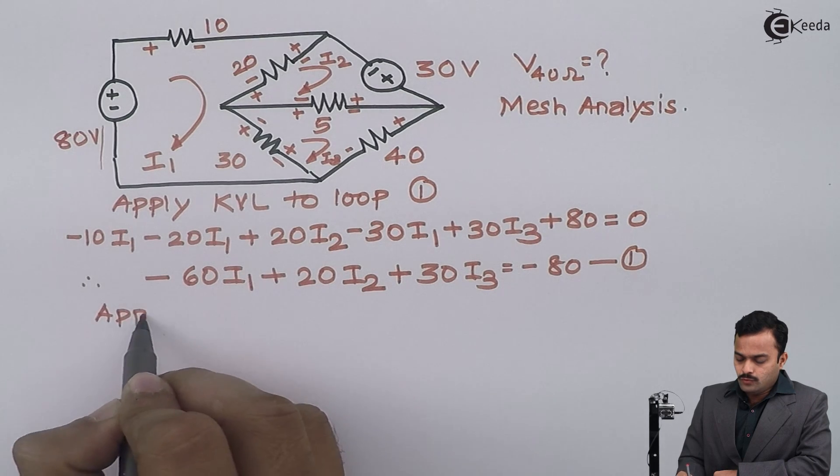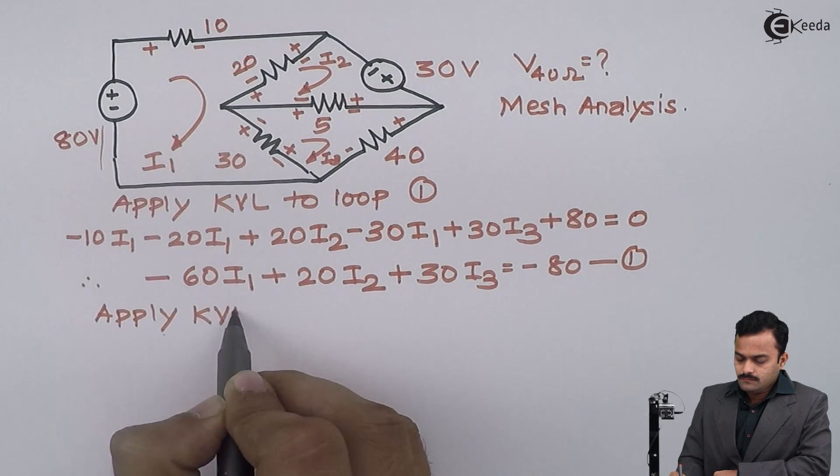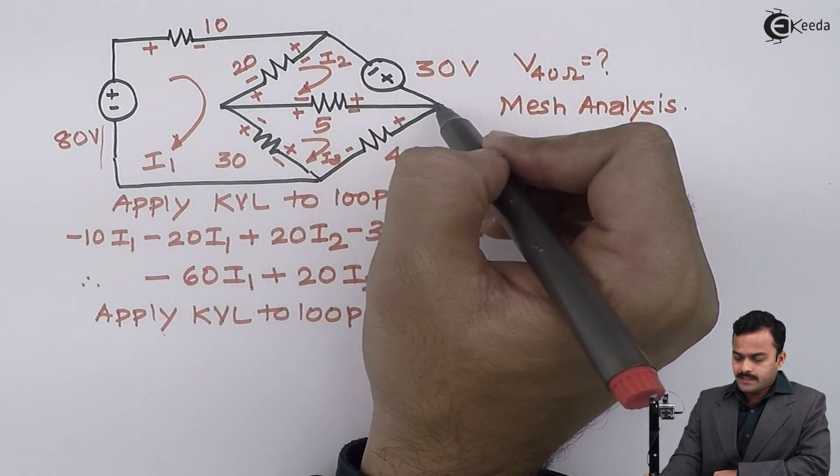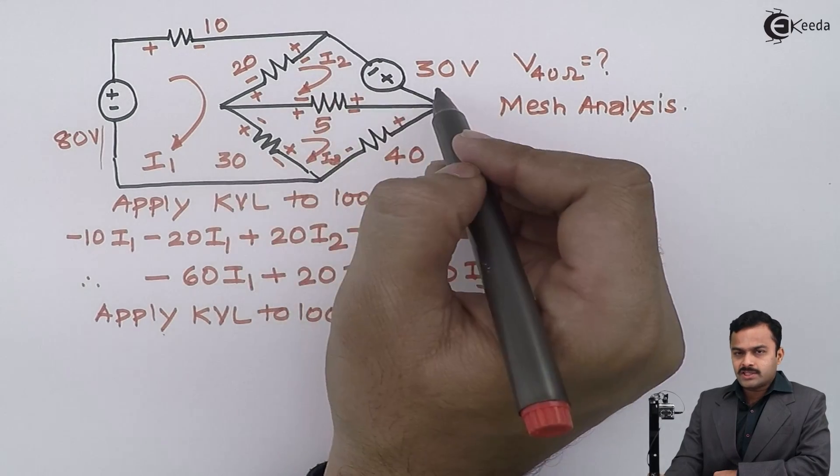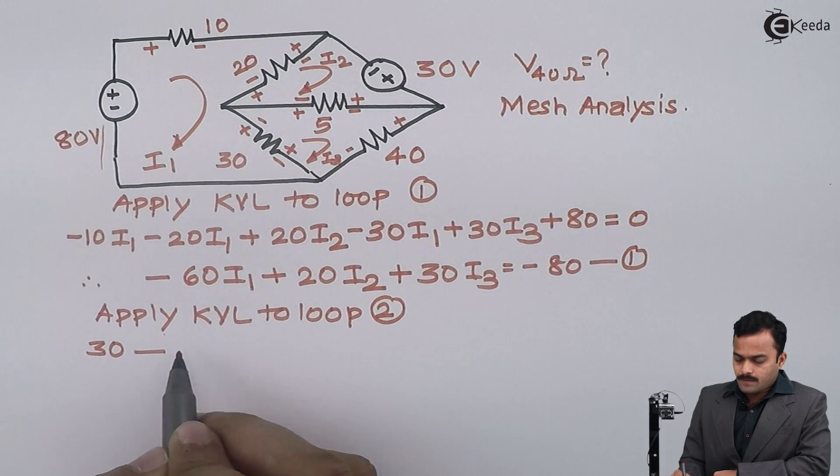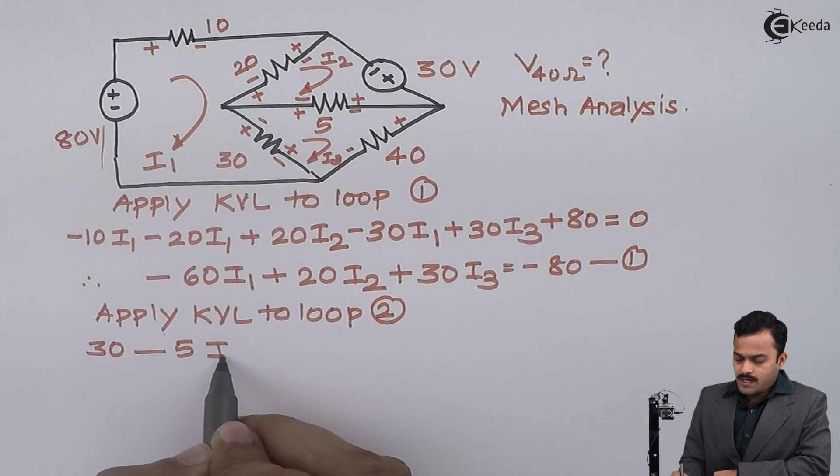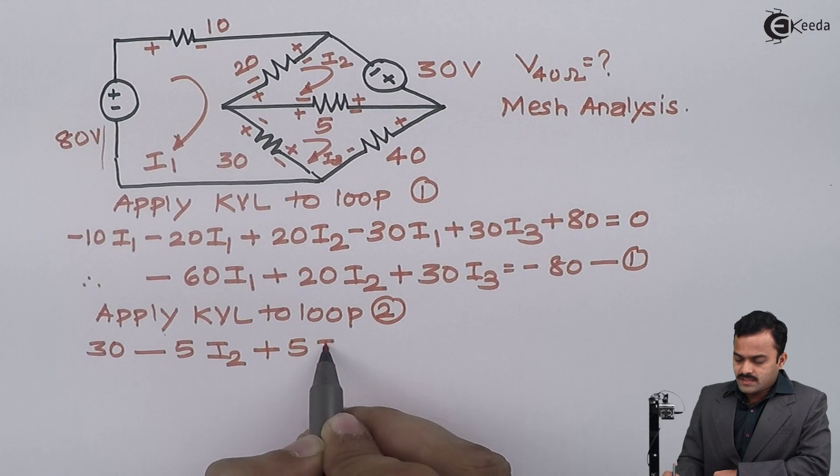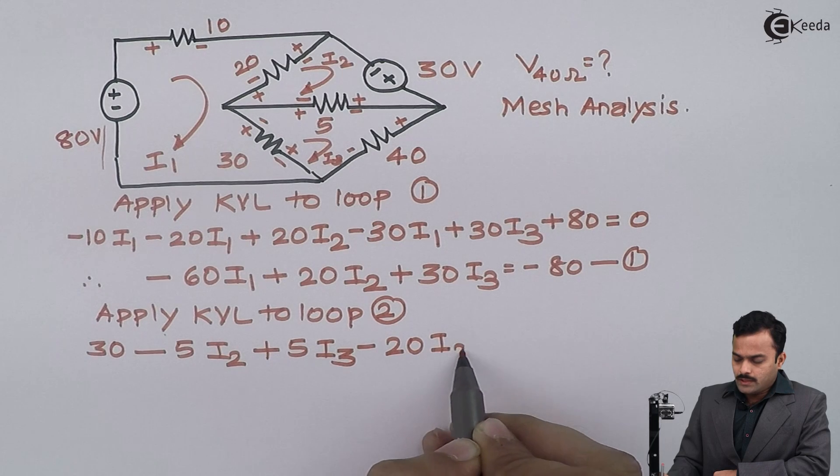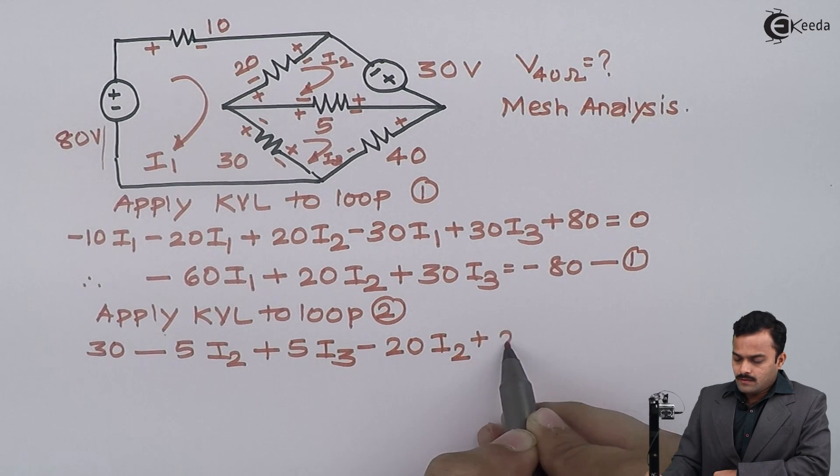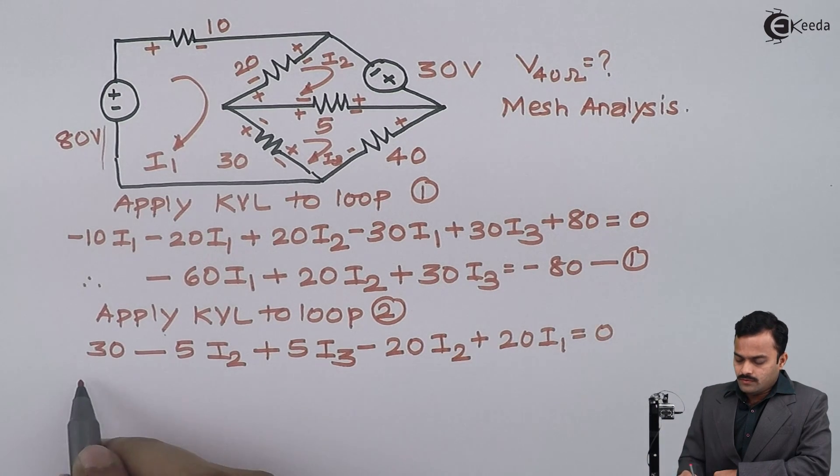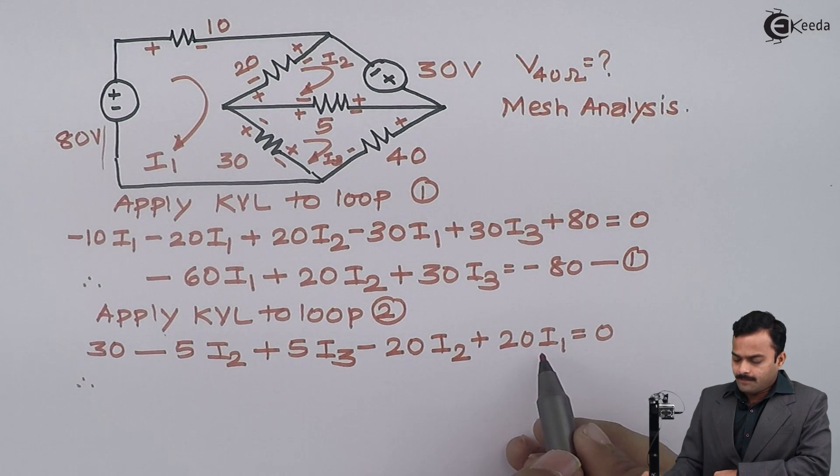Similarly, I can apply KVL to loop number two. I will start from this point and trace a path like this. In the direction of current, I am having plus 30I3 minus 5I2 minus 20I1 equal to 0.